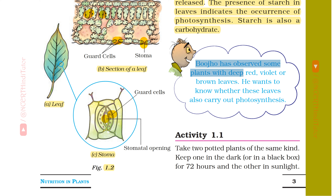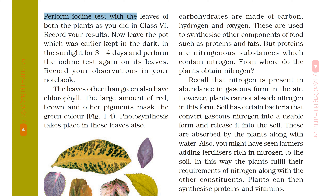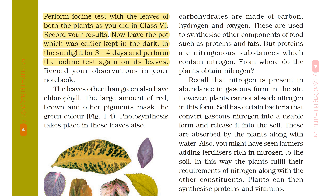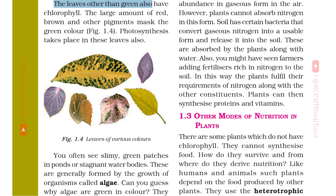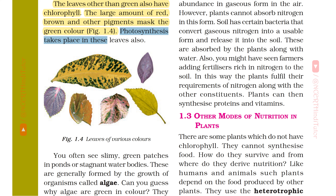Bujo has observed some plants with deep red, violet and brown leaves and wants to know whether these leaves also carry out photosynthesis. In Activity 1.1, take two potted plants of the same kind. Keep one in the dark or in a black box for 72 hours and the other in sunlight. Perform the iodine test with the leaves of both plants as you did in Class 6, and record your results. Now leave the pot which was earlier kept in the dark in the sunlight for 3-4 days and perform the iodine test again. The leaves other than green also have chlorophyll. The large amount of red, brown and other pigments mask the green color. Photosynthesis takes place in these leaves also.